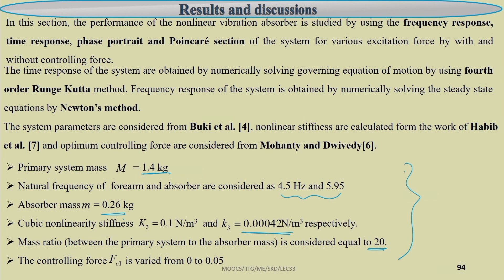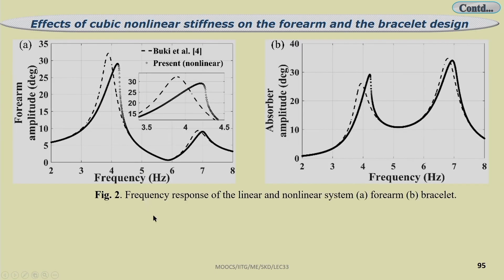The controlling force F_c1 is varied from 0 to 0.05 (passive case: 0). At ω = ωₙ the response amplitude is very high — around 25 degrees — meaning the forearm tremor can be up to 25 degrees. But by putting this absorber, the response amplitude is shifted to a region with minimum amplitude.